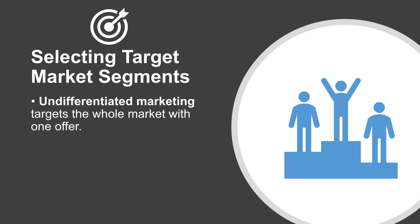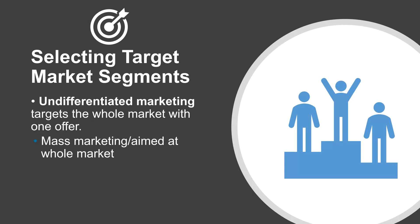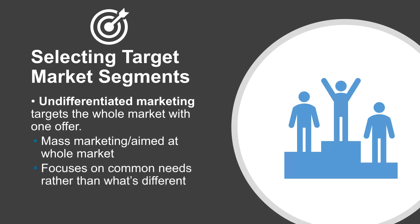Undifferentiated marketing is targeting the whole market with one offer. If Chris just went out and put his resume out there without doing the job description analysis or really trying to understand what job he wanted, he would be doing undifferentiated marketing — just offering his skill sets to the entire market on LinkedIn. That's also called mass marketing aimed at a whole market, and it's focused on common needs rather than what's different about you or your product.